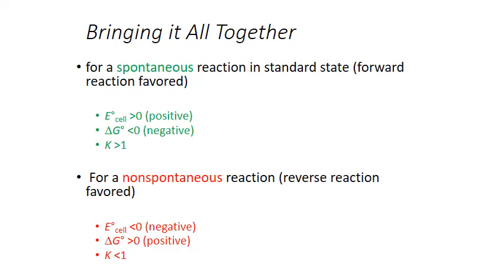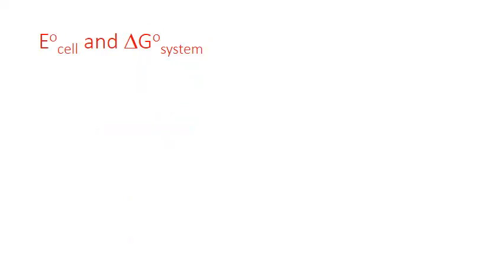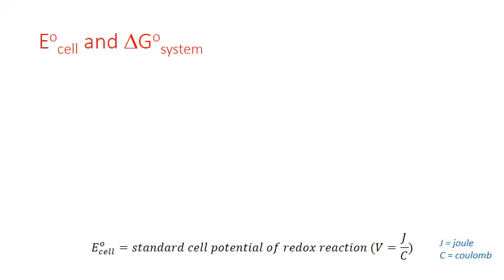Since all of these are ultimately indicators of spontaneous or non-spontaneous reactions, we should be able to connect them together — and we can. Let's start with the relationship between electrochemical cell potential and Gibbs free energy. E sub cell is the standard cell potential of a redox reaction measured in units of volts.